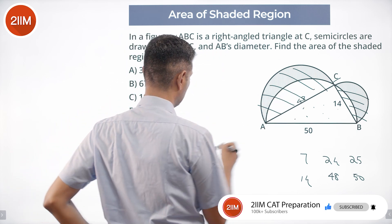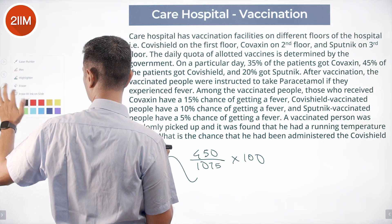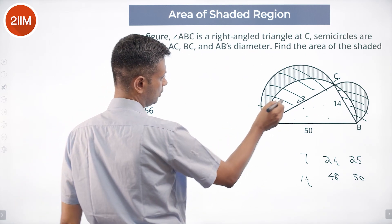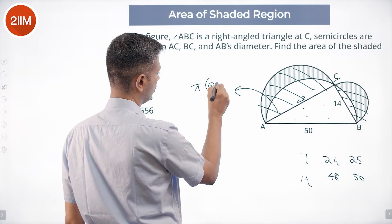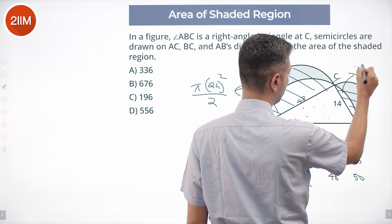This semicircle is π times 24 squared by 2. This semicircle is π times 7 squared by 2, which is πr² by 2.